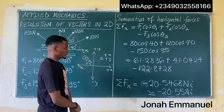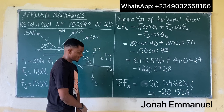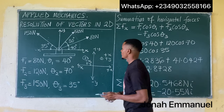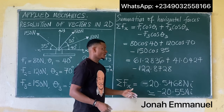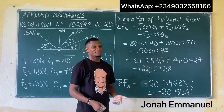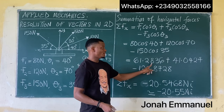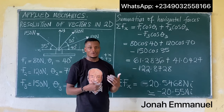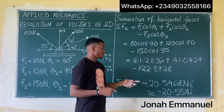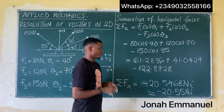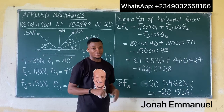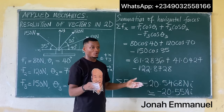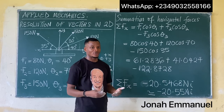Now let's get the summation of vertical forces. A note on decimal places: in mathematics, the more decimal places you use, the more accurate your results become — this is from numerical analysis. So I chose to use 4 decimal places; using 2 decimal places is still correct but less precise.